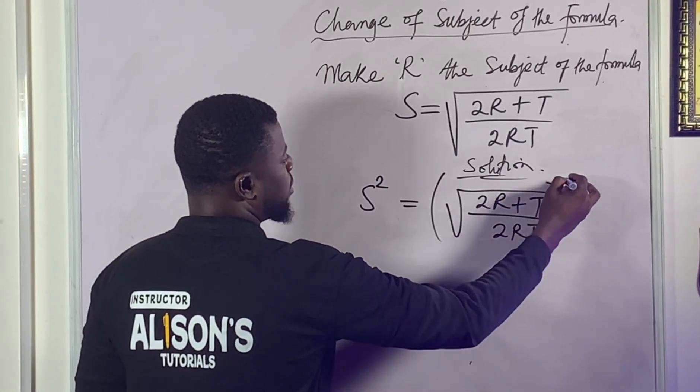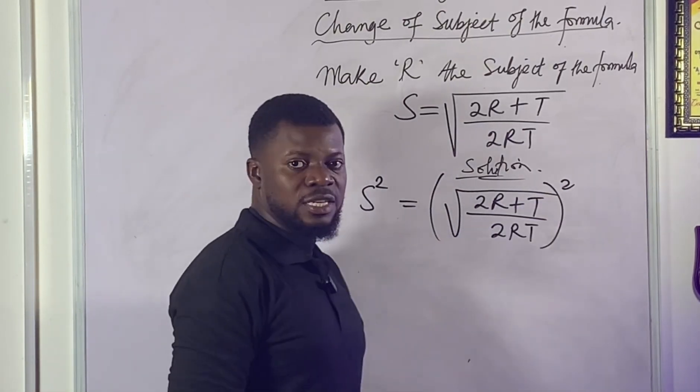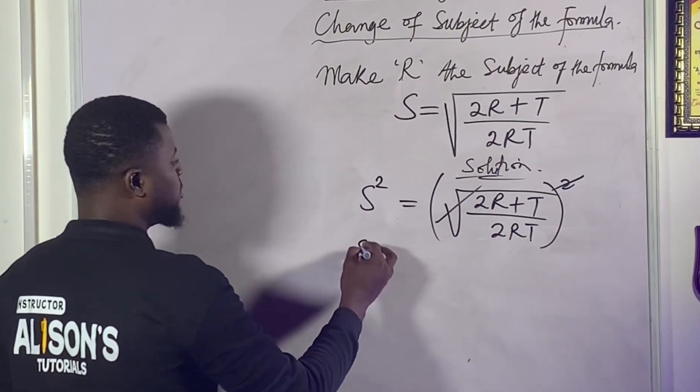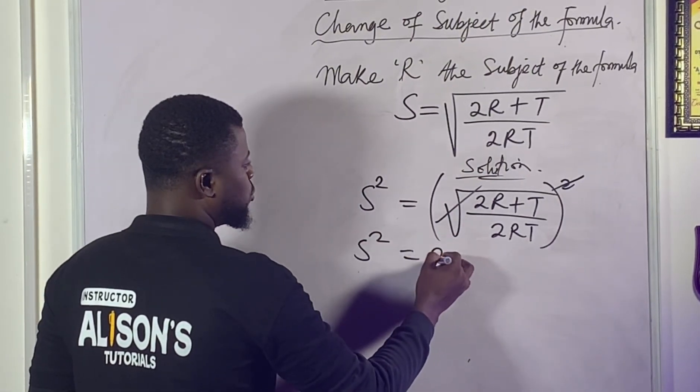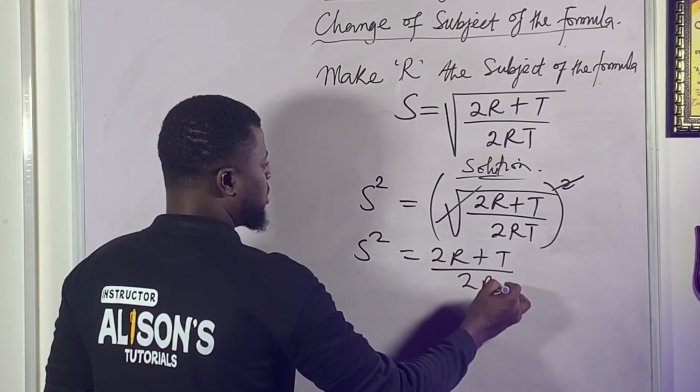By the time you have square root and square, they easily cancel out when they come together like this. So you have S squared equals all the left, there is 2R plus T all over 2RT.